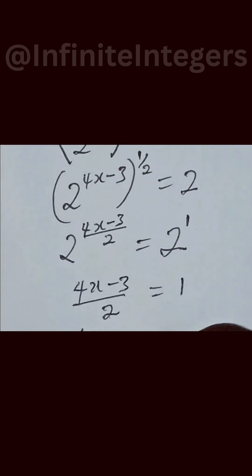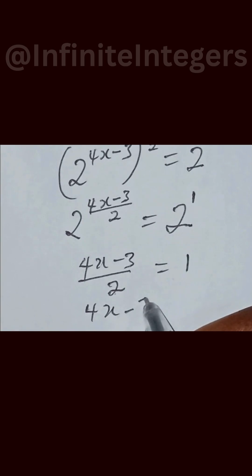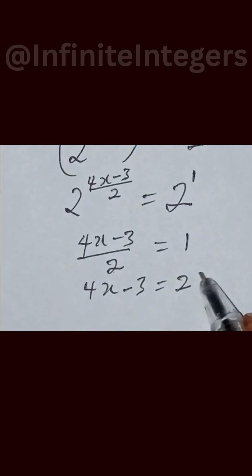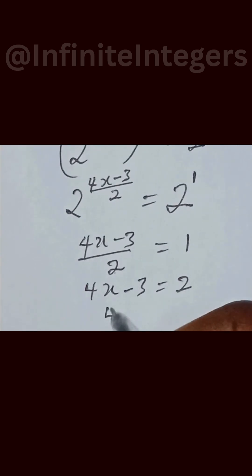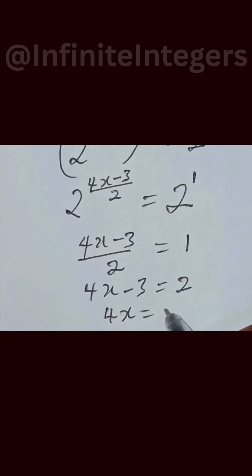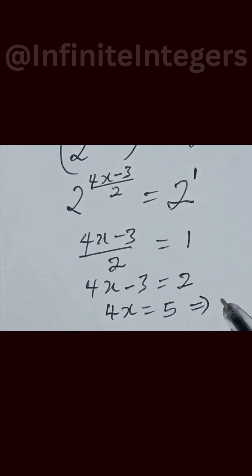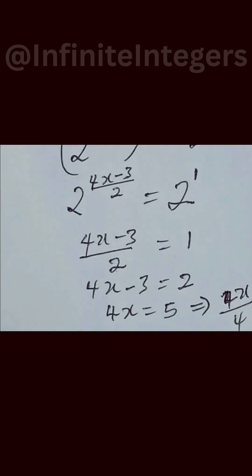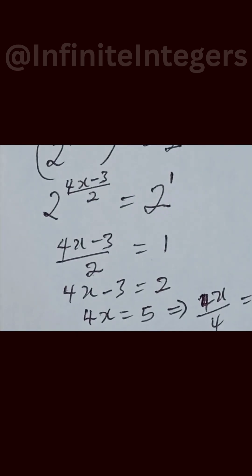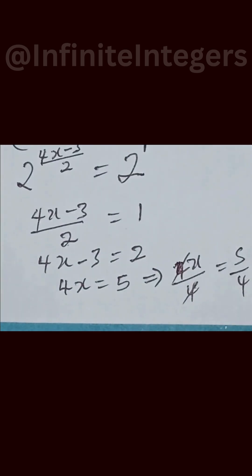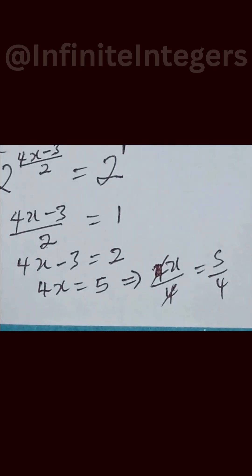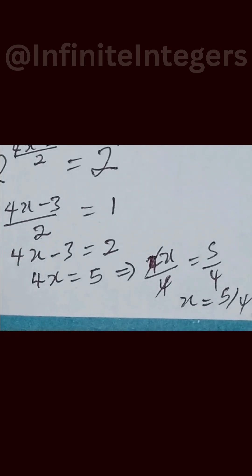Multiplying through, we have 4x minus 3 equal to 2. Then we move the 3 over, giving us 4x equal to 5. That implies we divide both sides by 4: 4x over 4 equal to 5 over 4. This 4 cancels out, and we have x equal to 5 over 4.